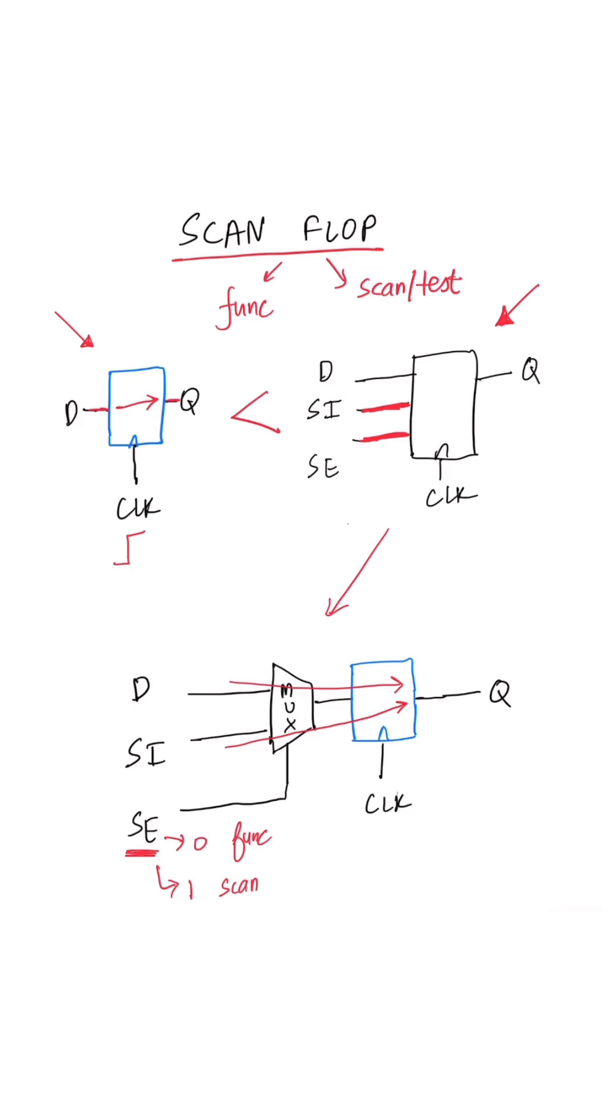That's the difference between a regular flop and a scan flop - we have an additional mux and some extra input pins.